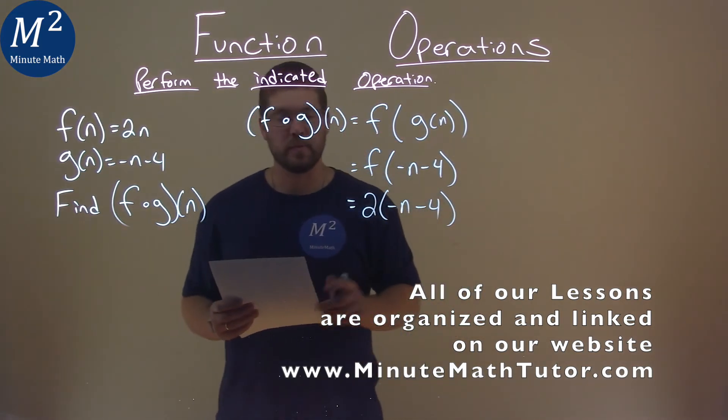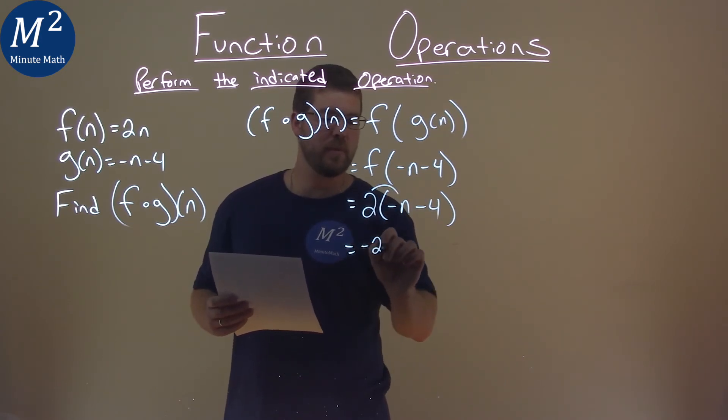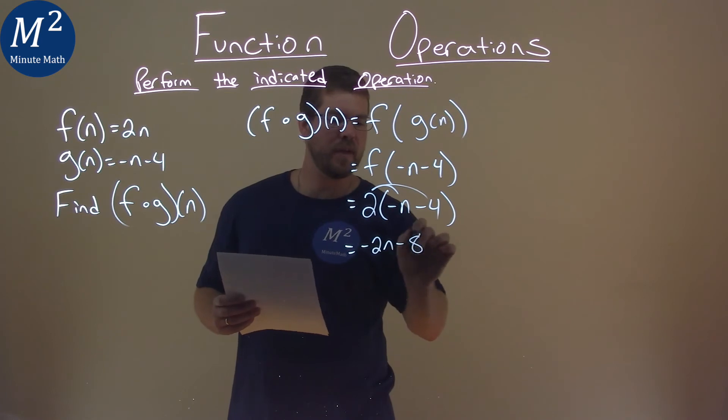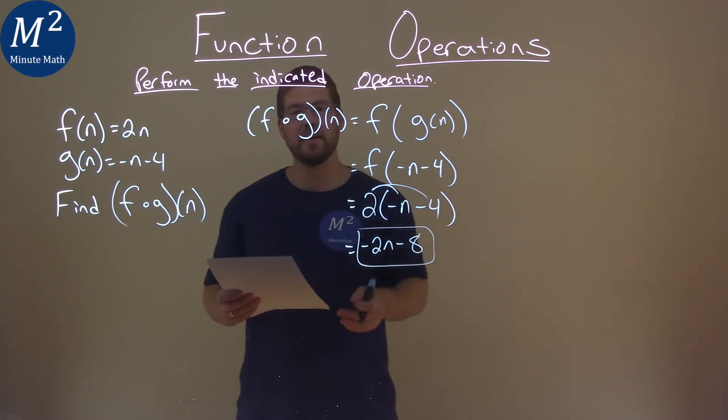Now we have to simplify. 2 gets multiplied by negative n, so we have negative 2n. 2 times negative 4 is negative 8. And so our final answer here is negative 2n minus 8.